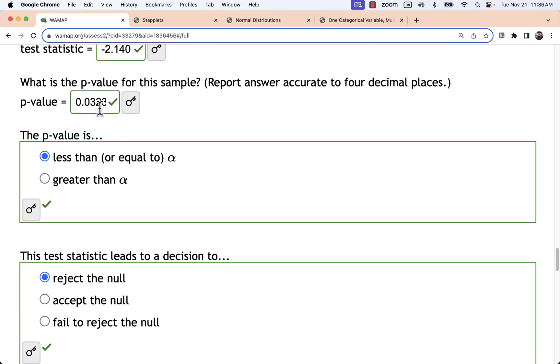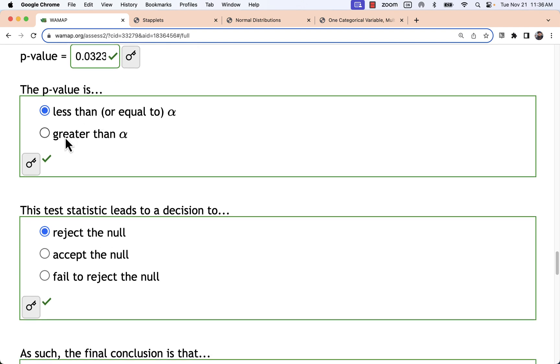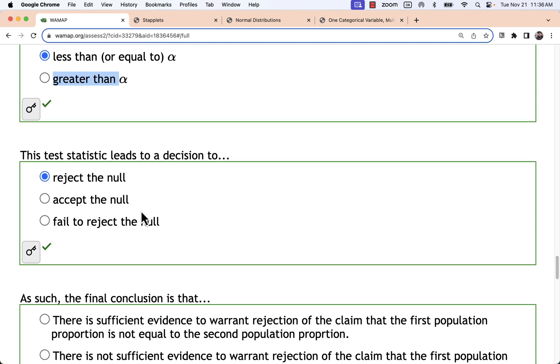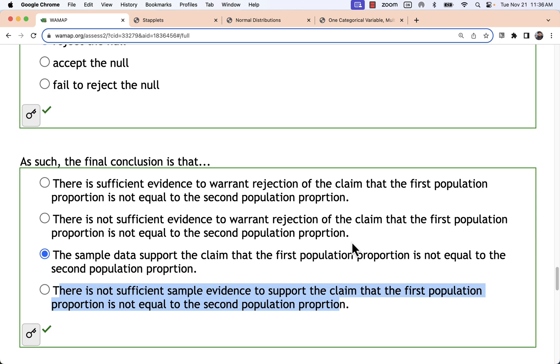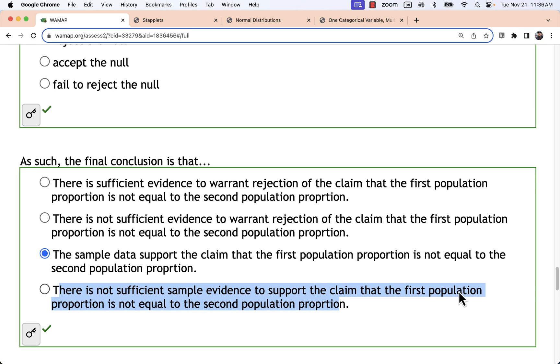Now if I had a larger p value, say it was 0.06 instead, greater than alpha, I would fail to reject the null. And then I would have not sufficient evidence to support a claim that they're not equal. I would have not sufficient evidence to reject a claim that they are equal. There's also a couple ways that could be stated as well.